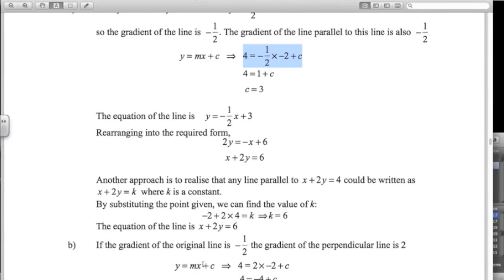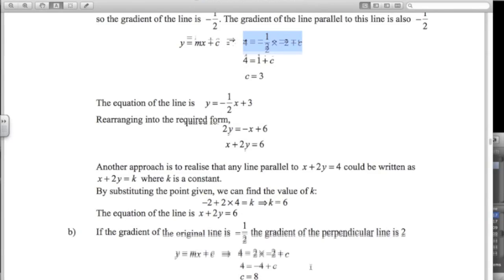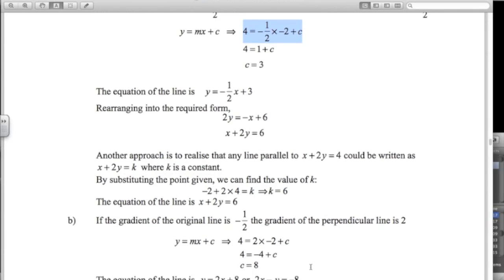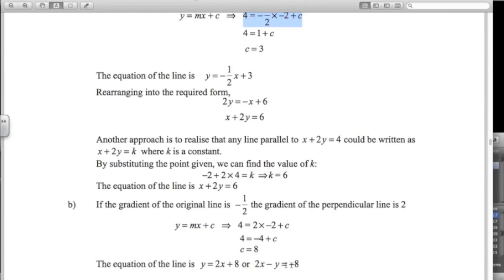So once again, we replace x with negative 2, y with 4, and we get c equals 8. So the equation of the line is 2x plus 8. Or if we bring the y over this side and the 8 over the other side, 2x minus y equals negative 8. A little bit of algebra there. Just make sure you see how I did that from there to there.